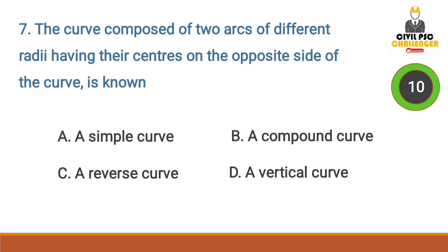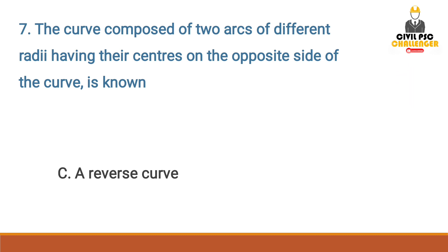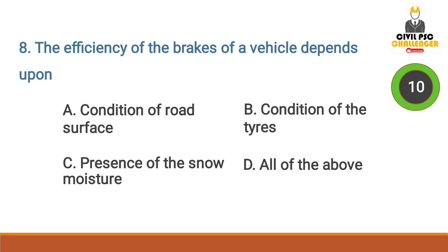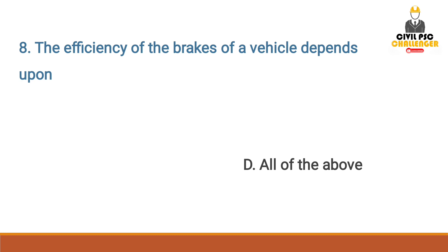The curve composed of two arcs of different radii having their centers on the opposite side of the curve — Answer option C: Reverse curve. The efficiency of the brakes of a vehicle depends upon — Answer option D: All of the above.